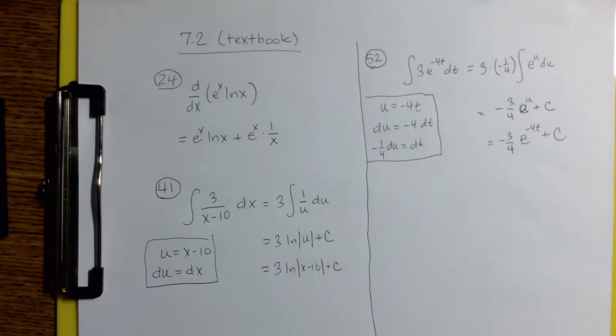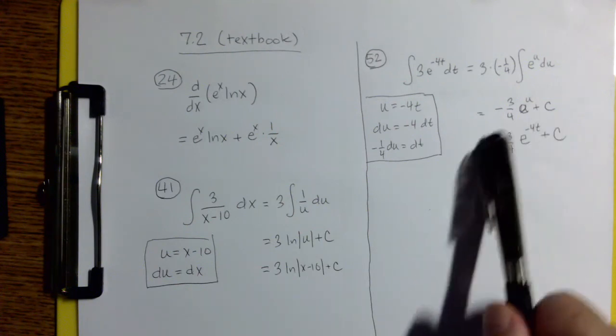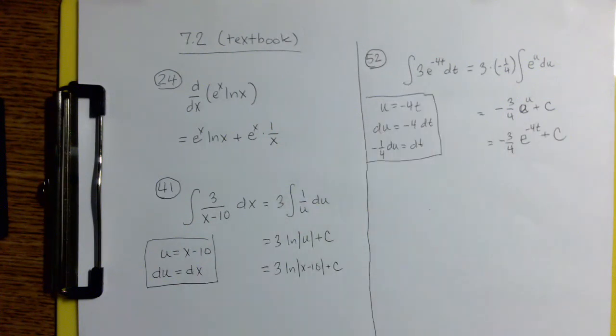Of course, we need to go back to the original variable because we've got an indefinite integral. So we end up with our family of antiderivatives being negative 3 4ths e to the negative 4t plus c. And I'll remind you again, the check, whenever you're doing an indefinite integral, the check on your answer is take its derivative and see if you get back to the original integrand.